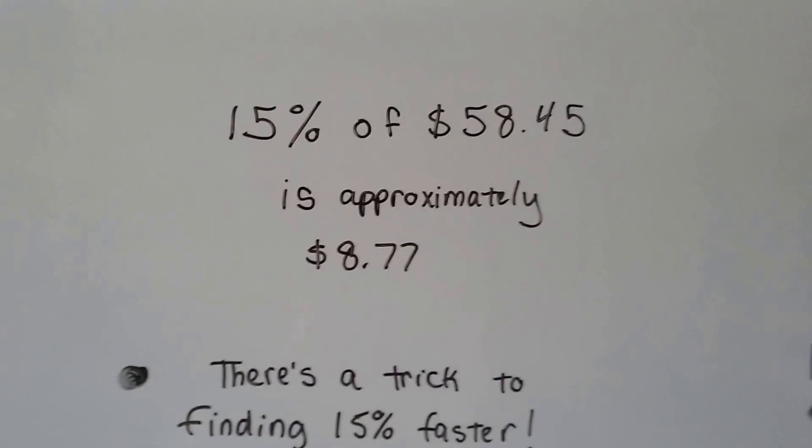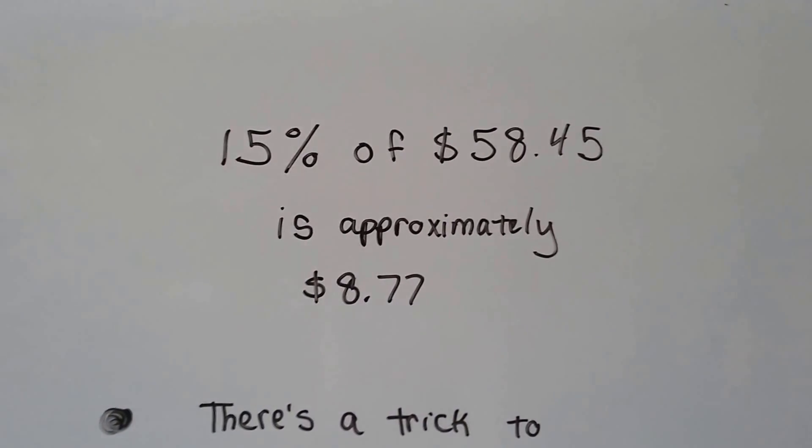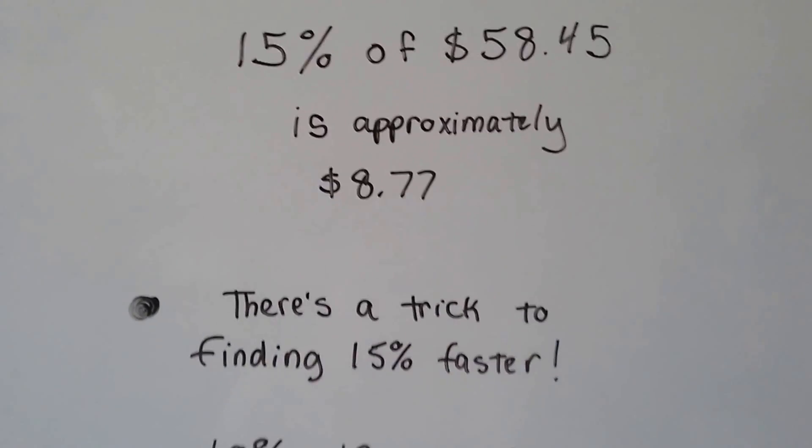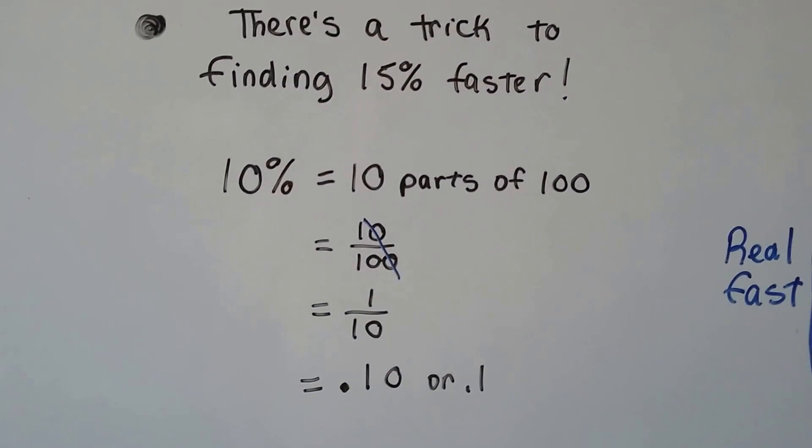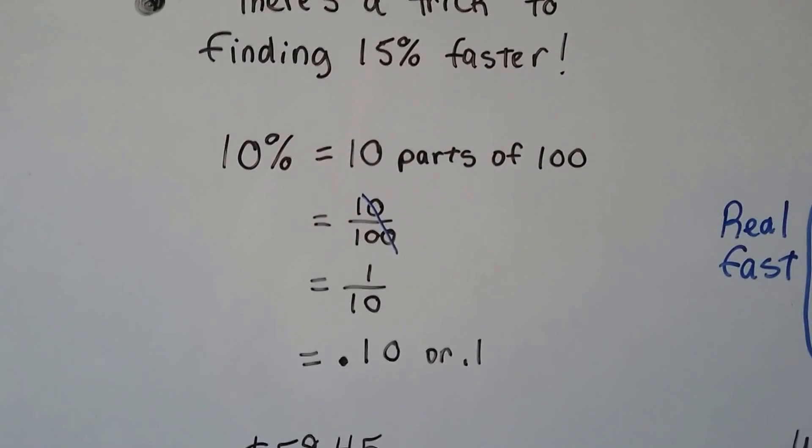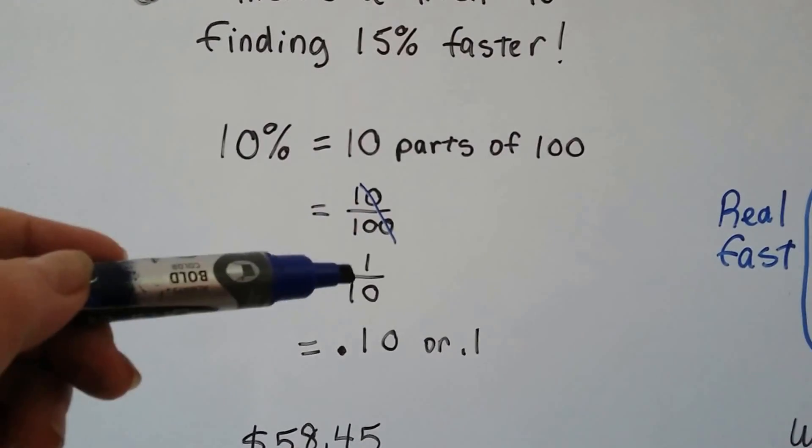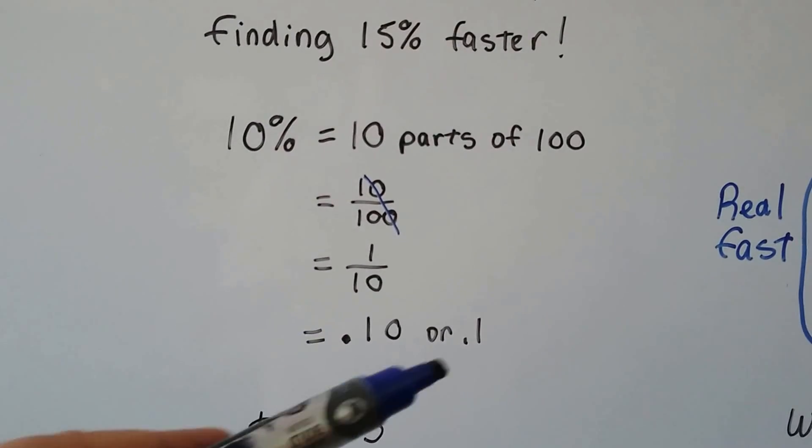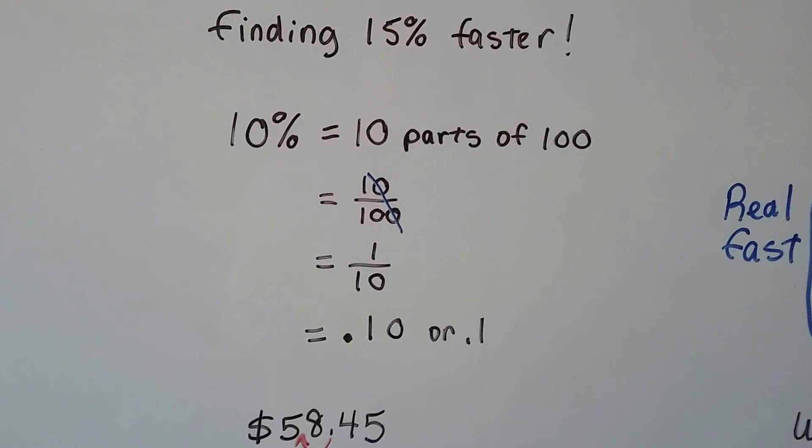So, we know 15% of $58.45 is about $8.77. It's pretty close. So, there's a trick to finding that 15% faster. 10% equals 10 parts of 100. It's 10 over 100, but we don't need to write those zeros. It's basically one-tenth. We can write it as .1 or .10. We don't need that zero, do we, on the other side.